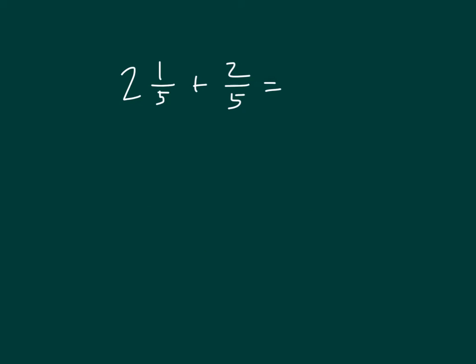Here is another problem where we have that mixed number 2 and 1 fifth plus 2 fifths. Let's show this addition using a number line. Let's go ahead and put the whole number 2 there because we're starting at 2 and 1 fifth.